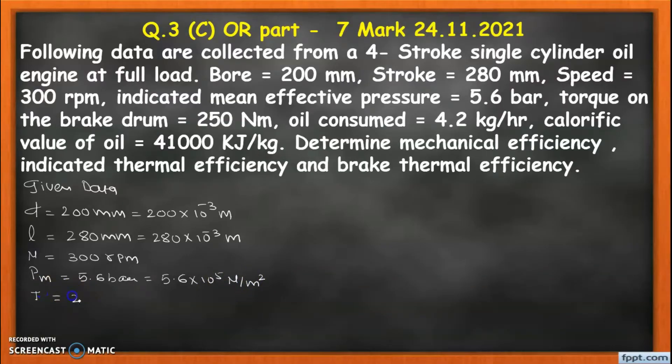Then torque is given, that is 250 newton meter, so no need to convert this unit. The mass of fuel consumption is given, that is 4.2 kg per hour, which becomes 4.2 divided by 3600 kg per second. And last, calorific value is given, which is 41,000 kJ/kg.